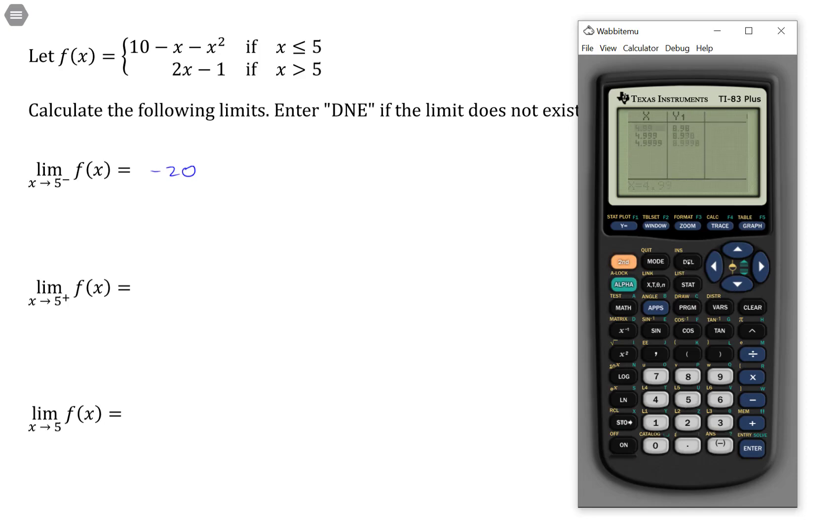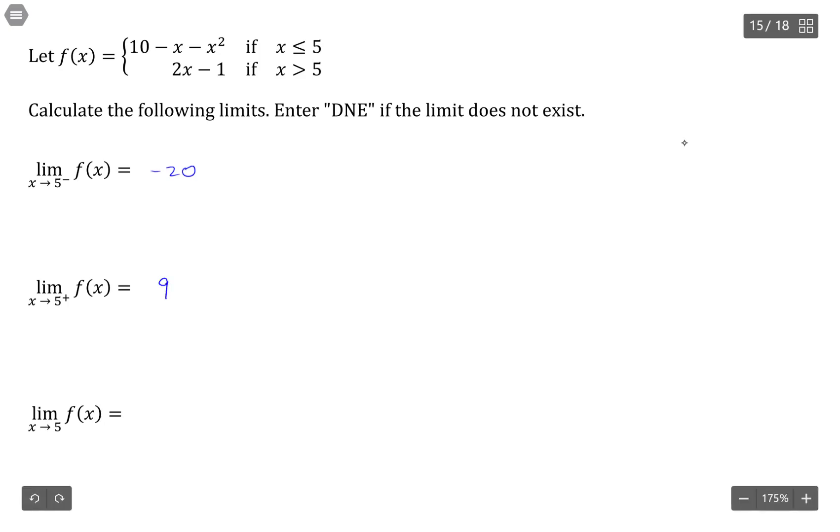When I do that from the table and put in values like 5.1, 5.01, 5.001, it looks like I'm getting closer and closer to 9. Since these two limits do not agree with one another, what we say is that limit does not exist.